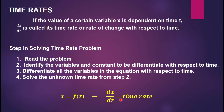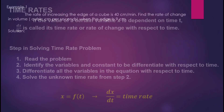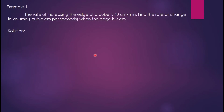Example one: the rate of increase of the edge of a cube is 40 centimeters per minute. Find the rate of change in volume in cubic centimeters per second when the edge is 9 centimeters.